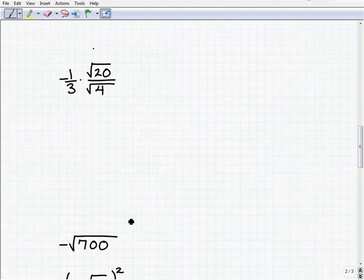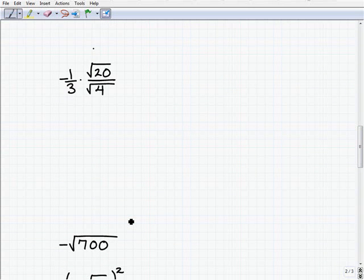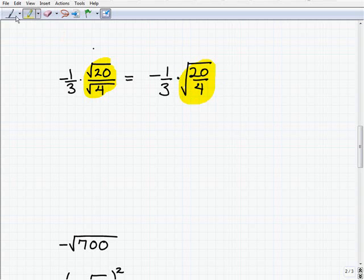So what do you think we want to do here? We could definitely take the square root of 4 in the denominator, but I'm going to show you something even easier. Let's go ahead and use one of our properties, but we haven't used it this way. Instead of having two separate radicals, one for the numerator and denominator, I'm going to write this as negative 1 third times the square root of 20 divided by 4. And what's 20 divided by 4? Well, it's 5.